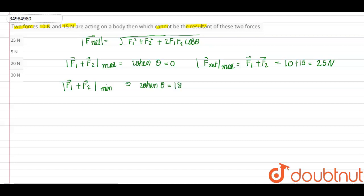The resultant is minimum when θ = 180°. So f_net min equals |f1 − f2|, which is equal to |10 − 15|, which equals 5N.